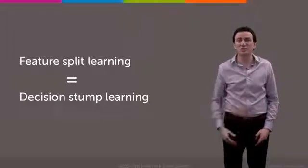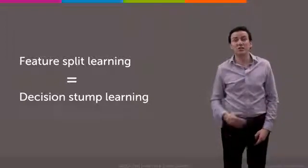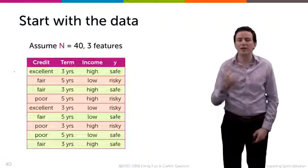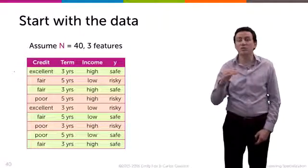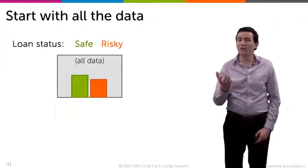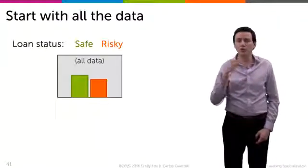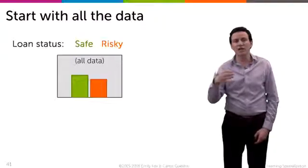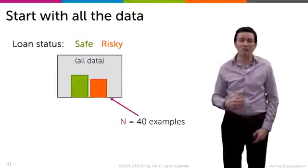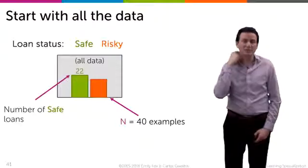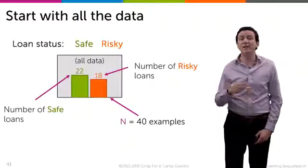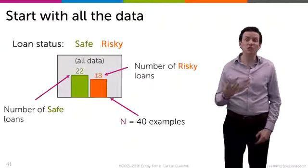So how do you learn a decision stump, or level-one decision tree, from data? We're given a dataset like this, just like we had before, and our goal is to learn a one-level decision tree. We're given the root node with all of the data. Some of the data points are safe, some are risky. There are 40 examples in our case — 22 of those are safe loans and 18 are risky loans.